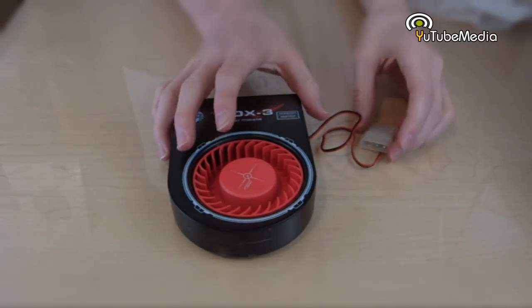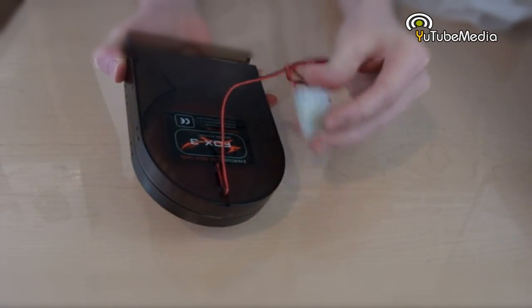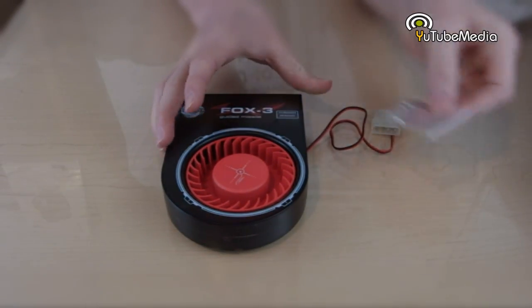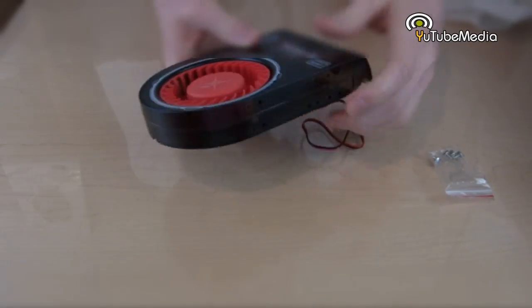So here's the Fox 3 itself. There's not much to the packaging. You have your molex adapter attached to it, mounting screws on the inside, just four of them in a little baggie, and you have your screw holes on the left and right sides of the Fox 3.